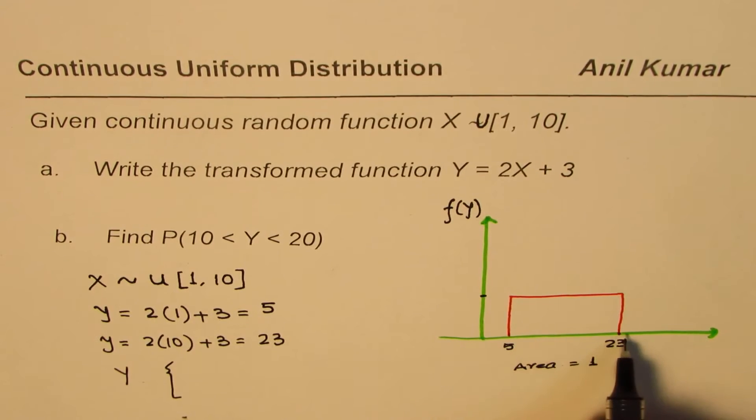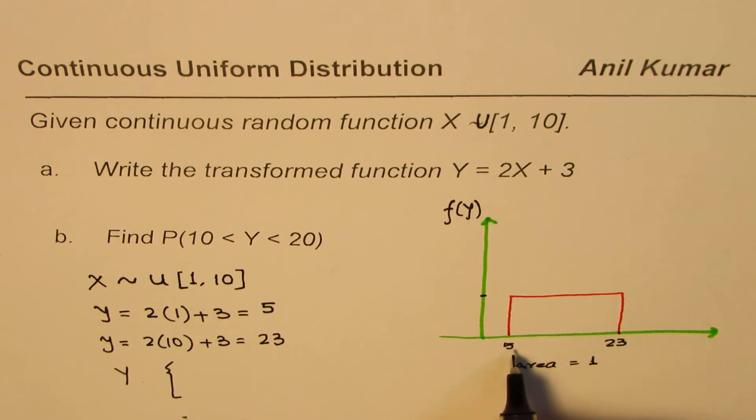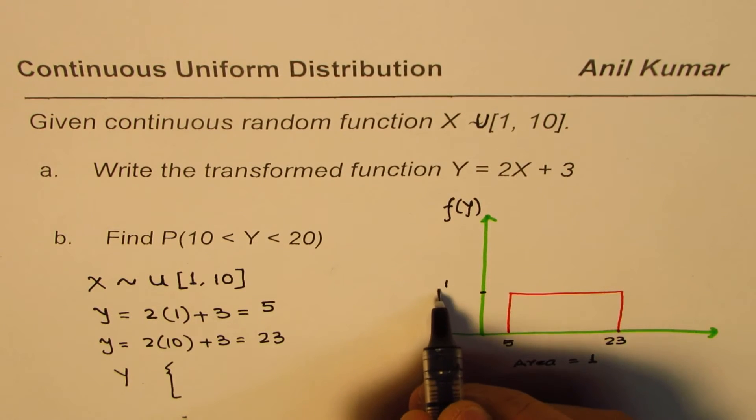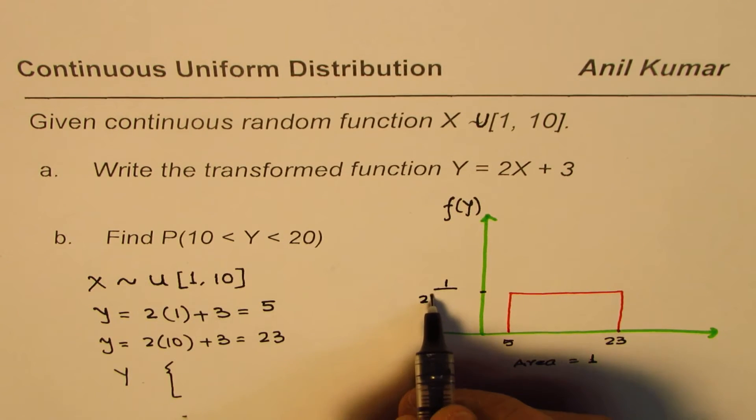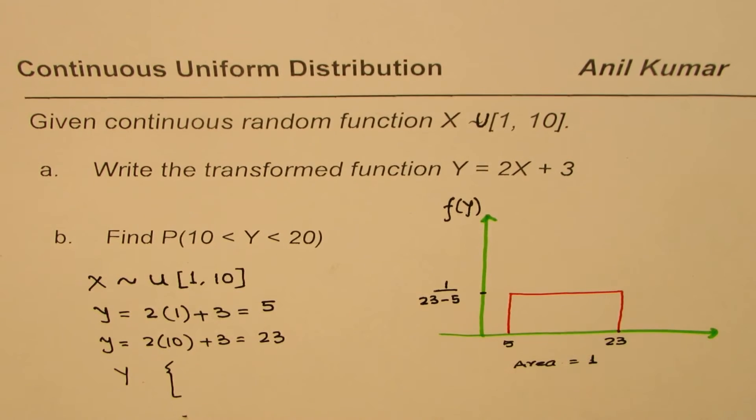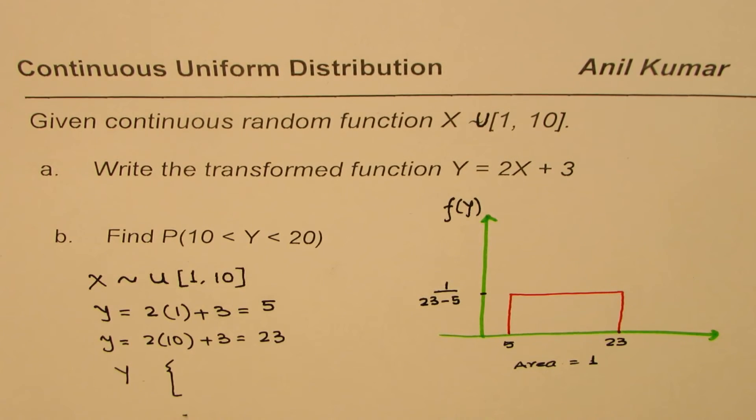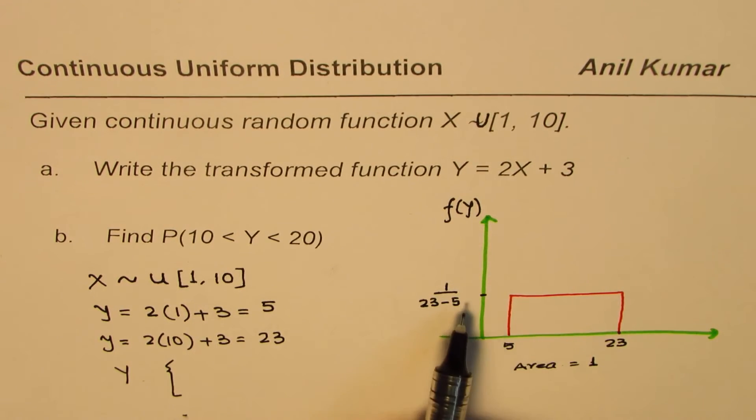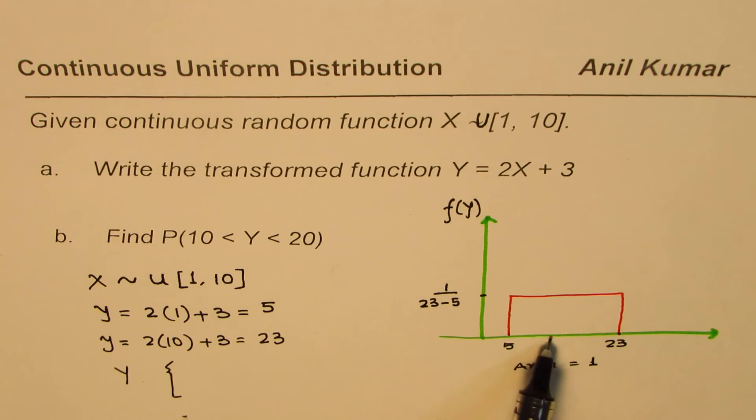Now what is this length? This length is 23 minus 5, correct? So this length is 23 minus 5. And therefore, to get this as 1, we should have this value as 1 over 23 minus 5. Do you agree with me, right? So in that case, when you multiply these two quantities, in that case we get the total area as 1, right?